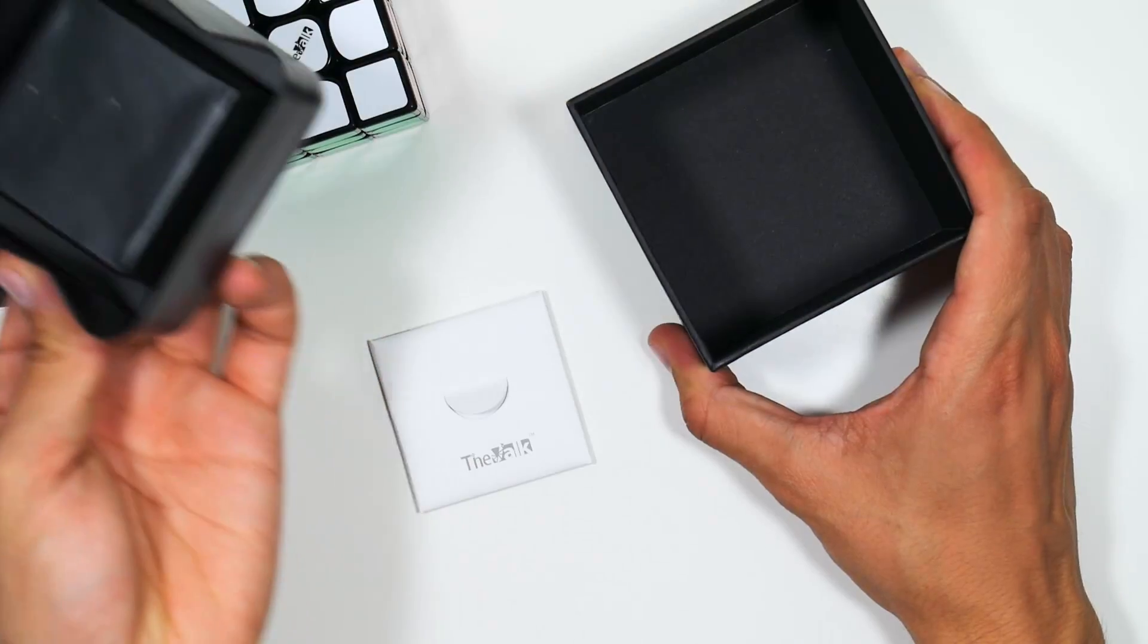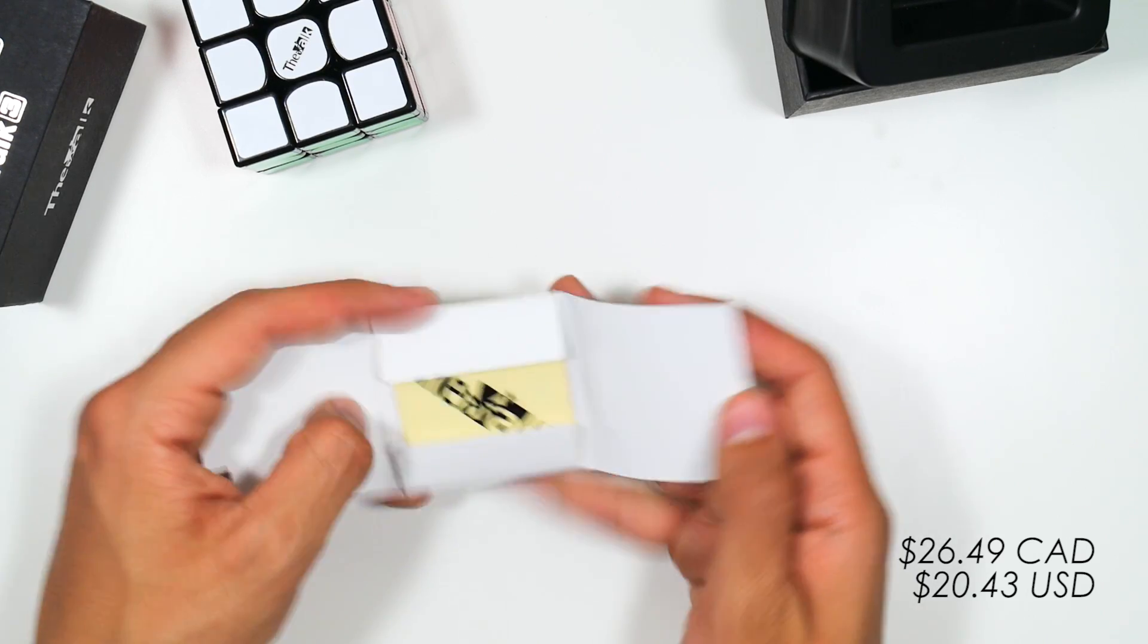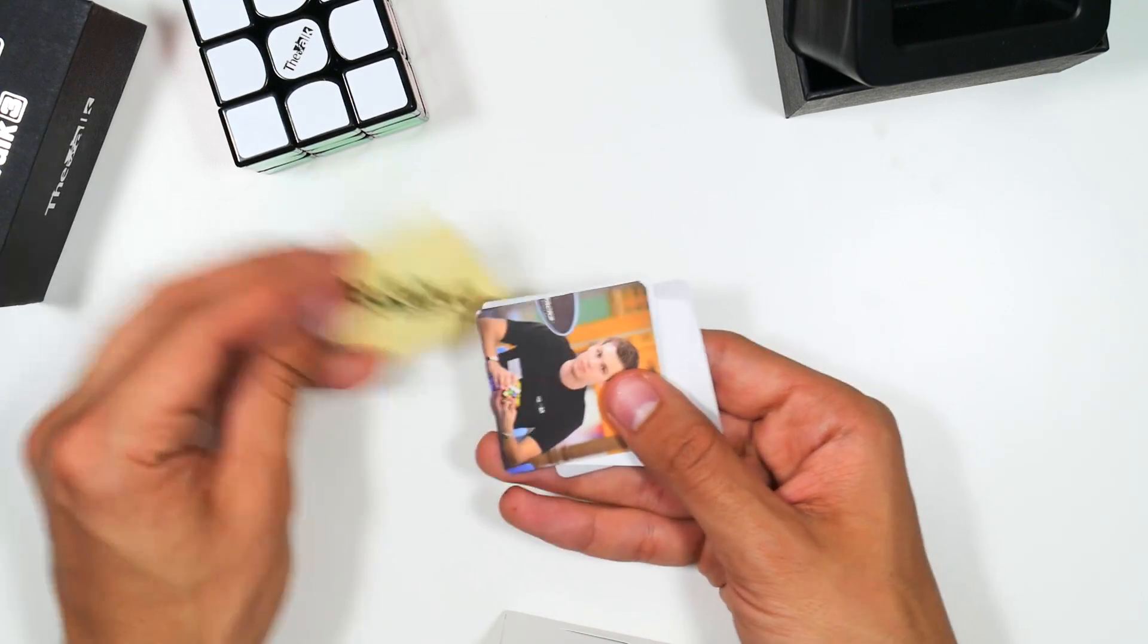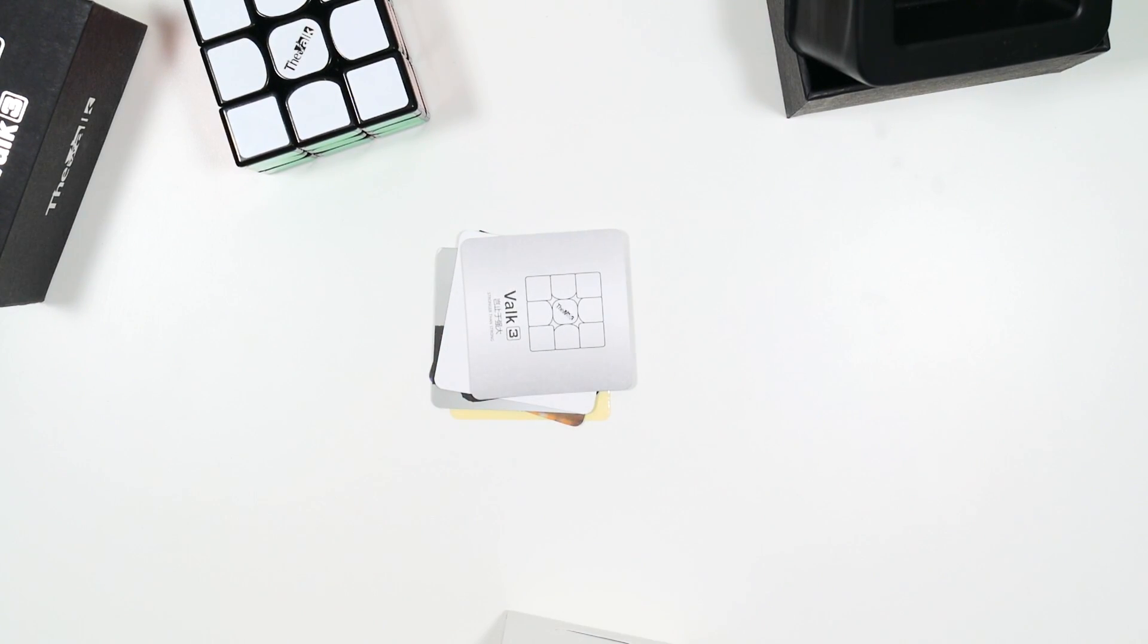Because this puzzle is not magnetic, it comes in at a much lower price point than the other puzzles, at around $26 Canadian or $20 American. In the box you get the cube, and then you get this little pamphlet of basically Valk things that are like a Valk sticker, some different pictures of Mats Valk himself, and a few other things like that.